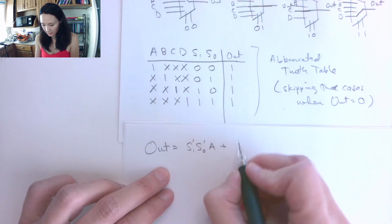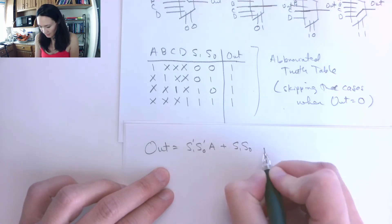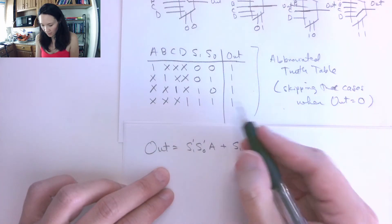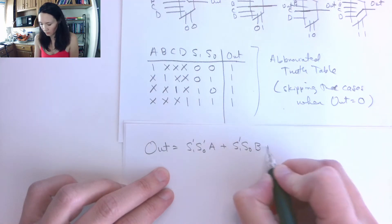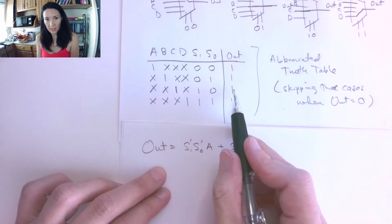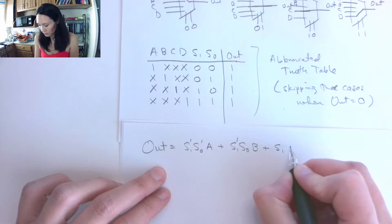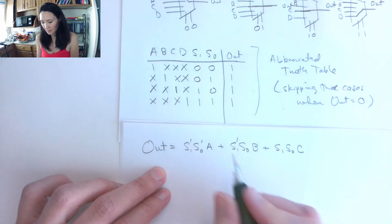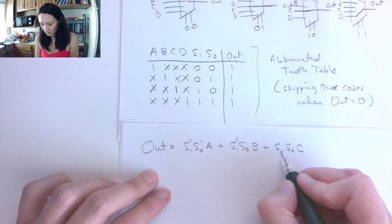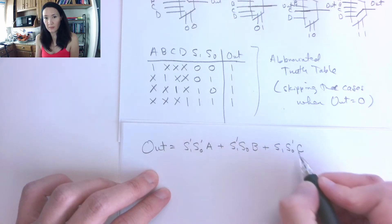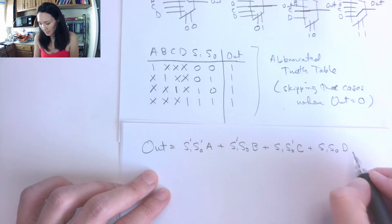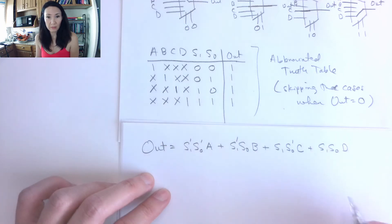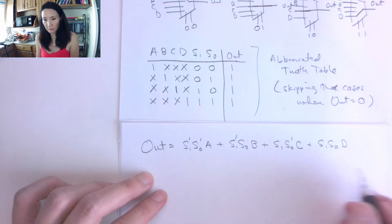The next row: inputs S1, S0 — I'm going to select B if S1 is complemented and S0 is not. Then the third row: I'm going to select C this time, as long as S1 is a one and S0 is a zero, so I put a complement on S0 to indicate it needs to be zero for this product term to be one. Finally, for S1 and S0 both equal to one, I'm going to select D — both are true, so I don't need any complements. This gives me my full sum-of-products form.